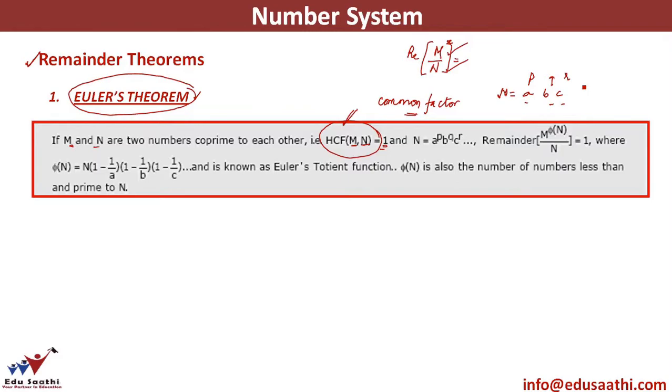Once you do prime factorization, find out the Euler coefficient. Now the value of Euler coefficient would be given as this. If you look at this, this is the value of Euler coefficient that we have. φ(n) or the Euler coefficient n is given by n into 1 minus 1 by a, 1 minus 1 by b, and 1 minus 1 by c.